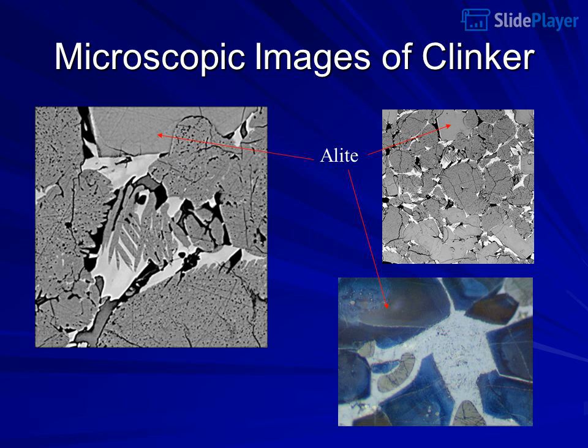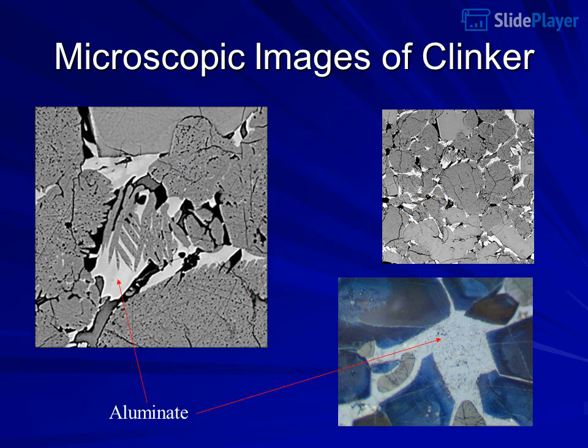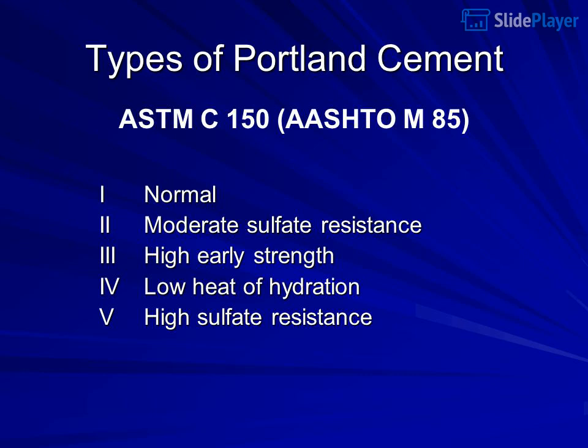Microscopic images of clinker phases are shown: alite, belite, aluminate, and ferrite. These microscopic images illustrate the distinct crystalline phases present in Portland cement clinker.